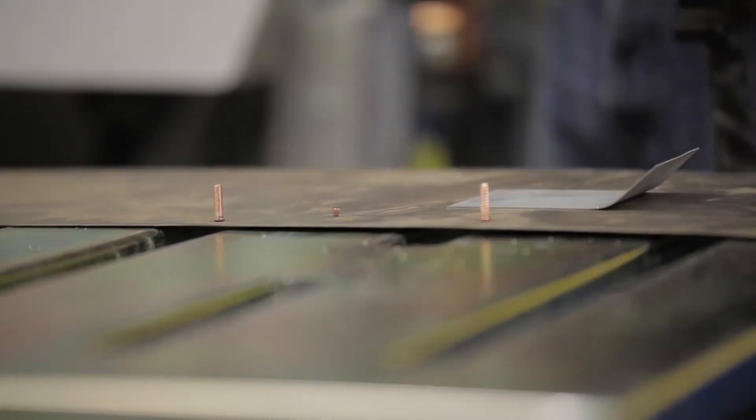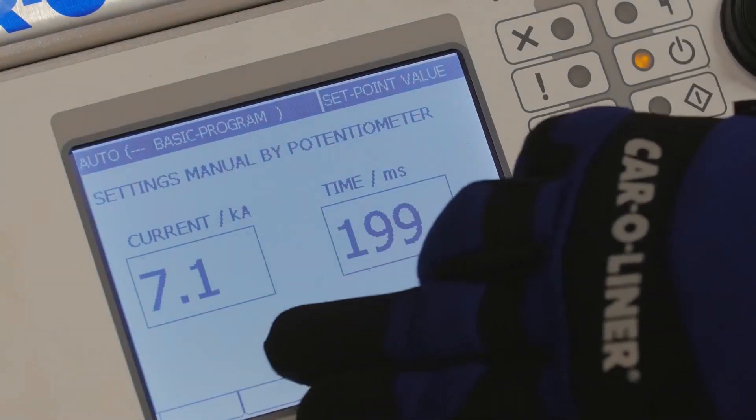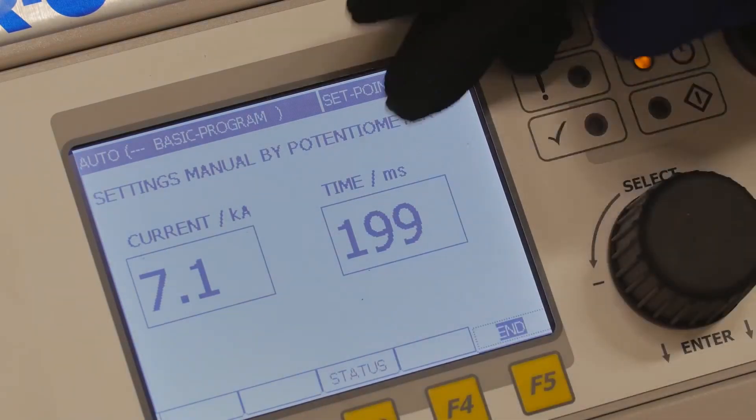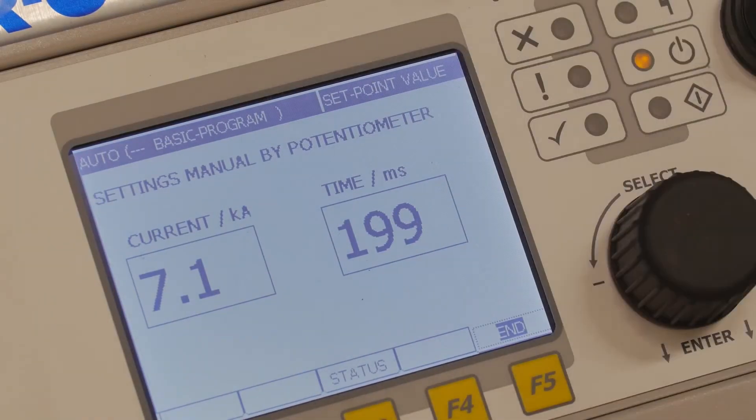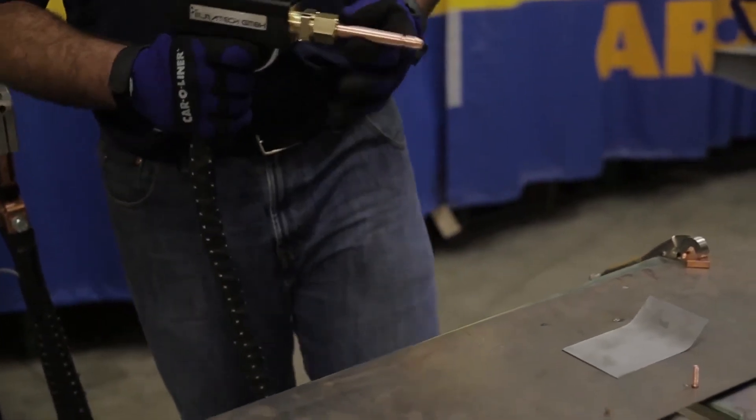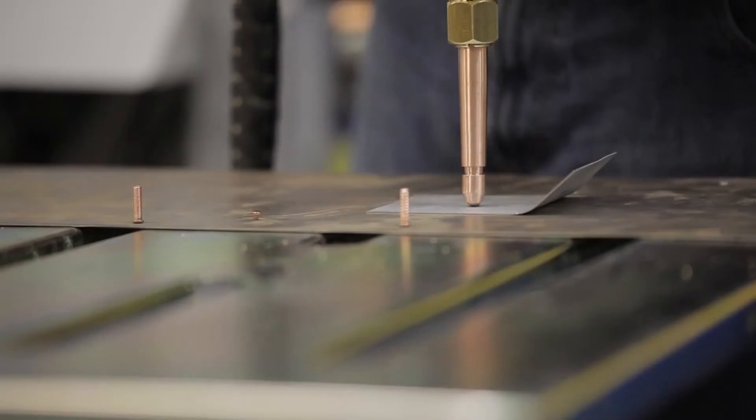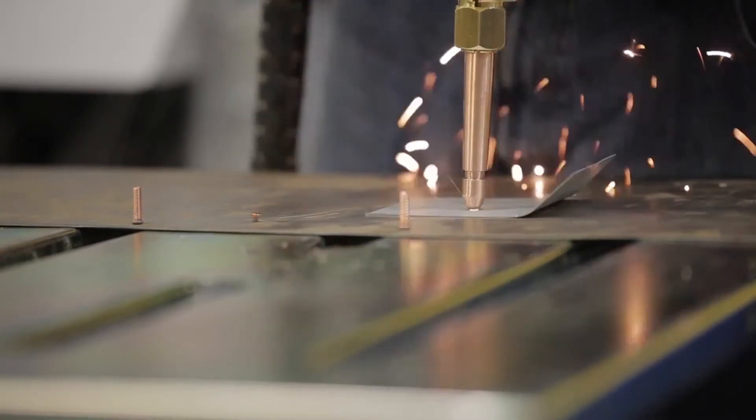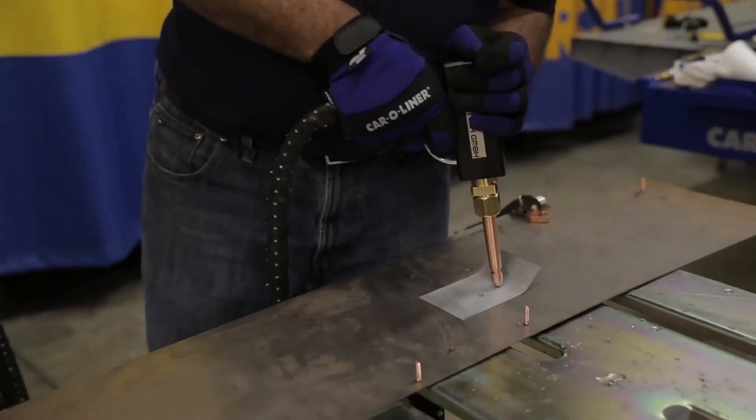So here we have our current turned up pretty high. Our time is set down just under 2 tenths of a second. So what we're looking for is a hot fast weld. So I'm going to start with a good amount of pressure and we're going to go ahead and make a weld. You can try another one a little closer.